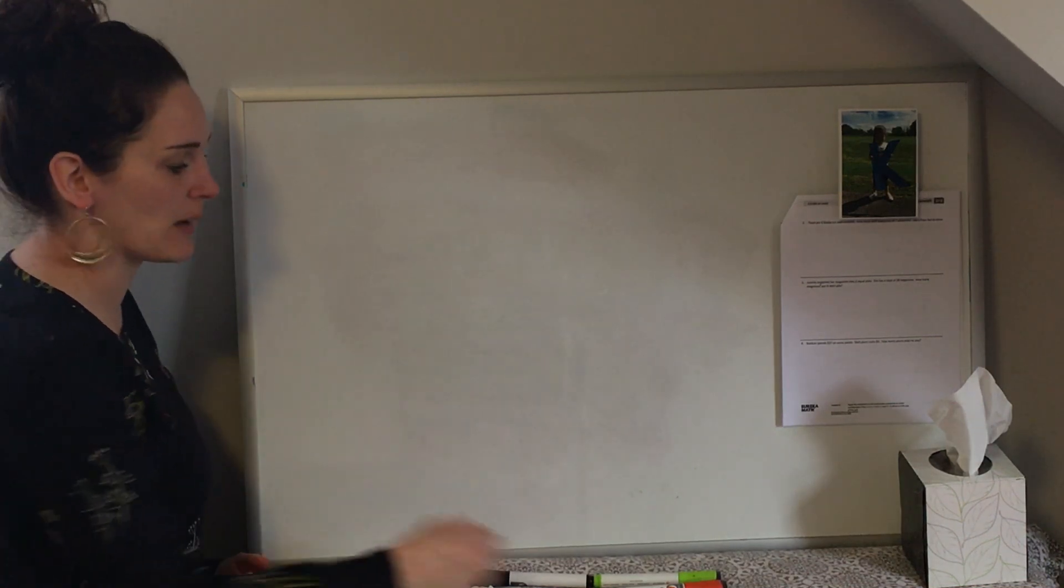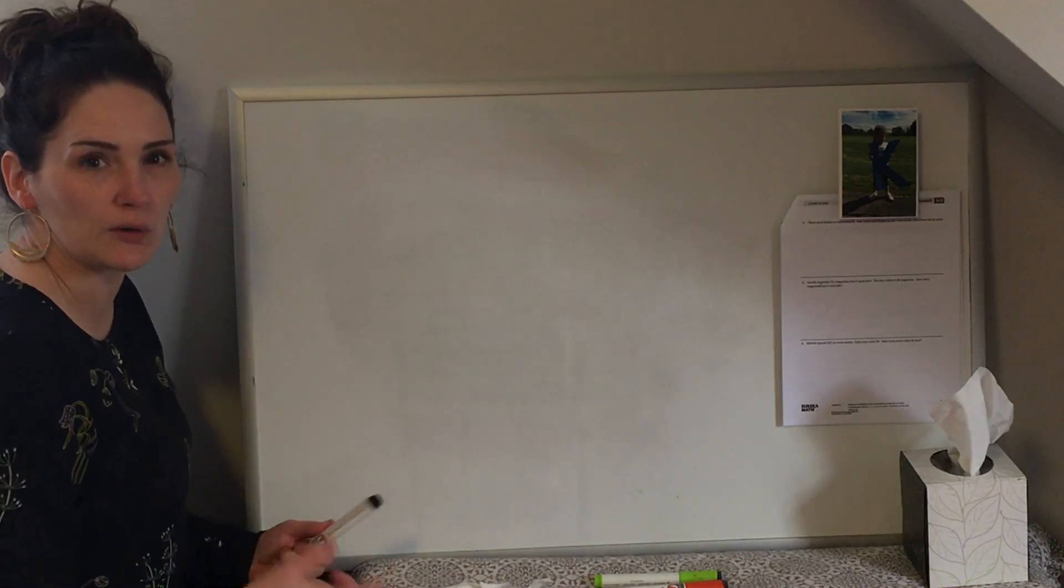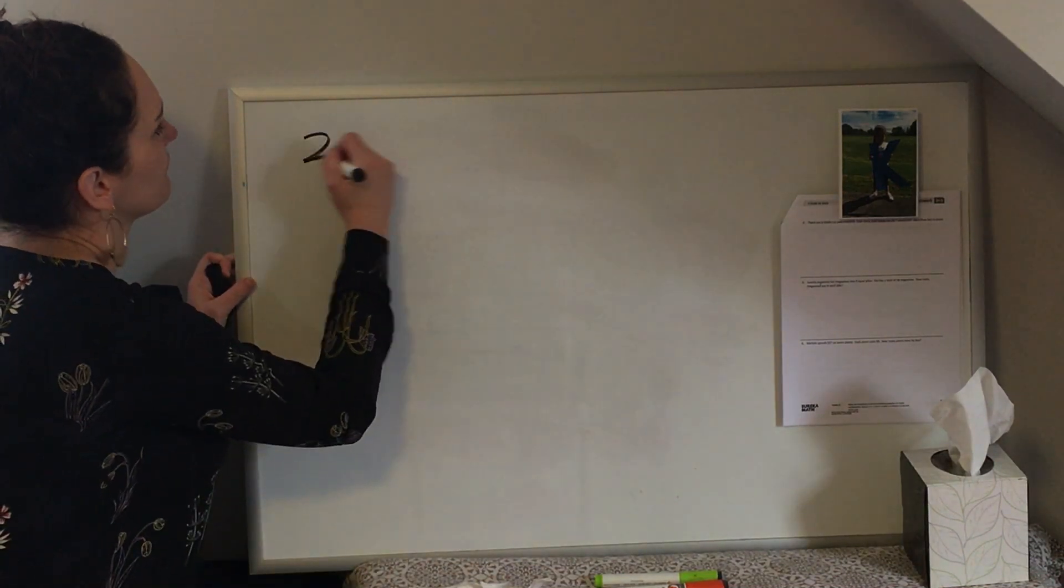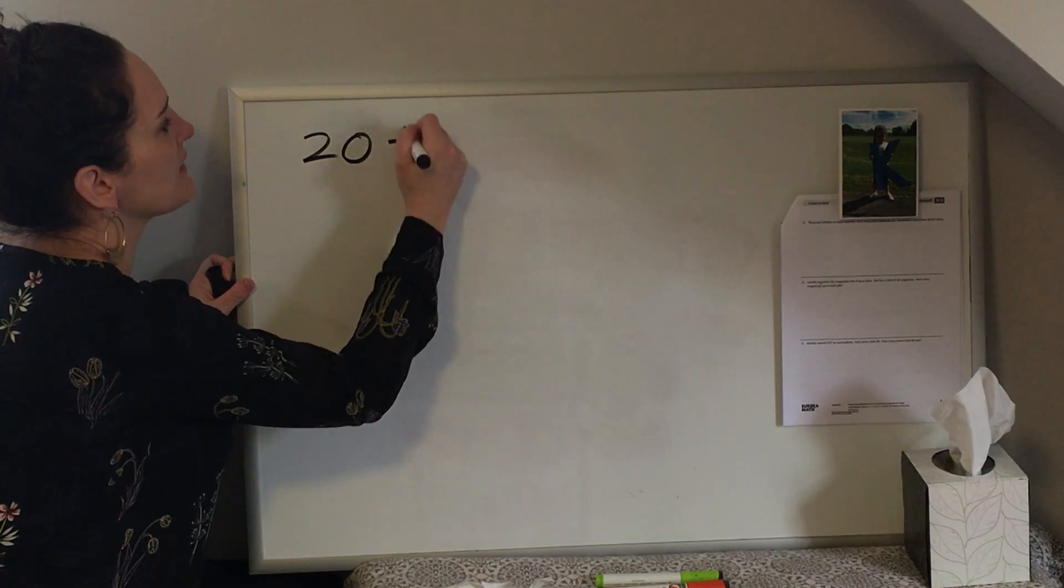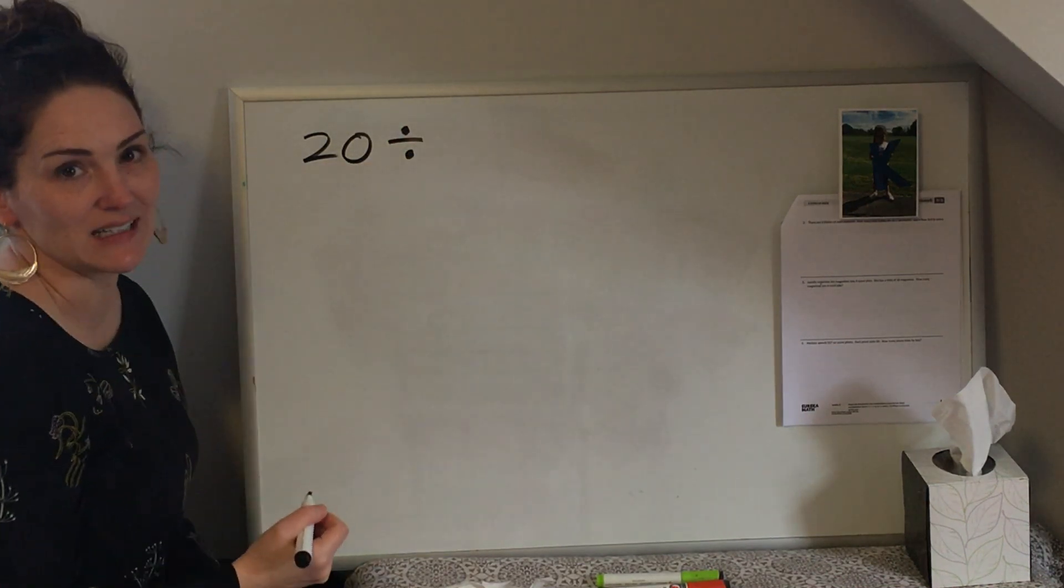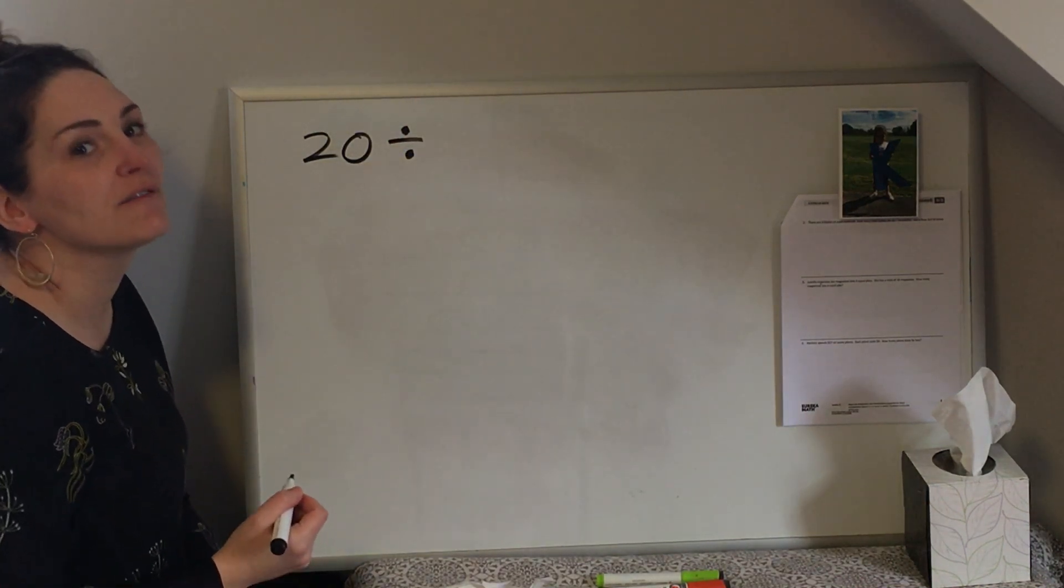So let's pretend that we have a division problem and this division problem tells us our whole. So we know our total is 20 and we know we're going to take those 20 pieces of candy and we're going to put them into four bags.